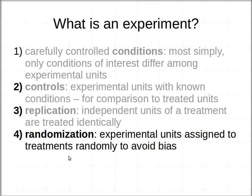The fourth major condition of an experiment is randomization. Experimental units need to be assigned to treatments randomly so that you aren't already biasing your results. Imagine our greenhouse where you have plants growing in different fertilizer treatments. If you used a couple different kinds of potting soil, you want to be careful that you assign your different fertilizers to those different bags randomly, so you don't have all the low fertilizer treatments happening to be in one kind of potting soil — because obviously that would confuse you. You wouldn't know if your growth differences are due to the potting soil or the fertilizer.